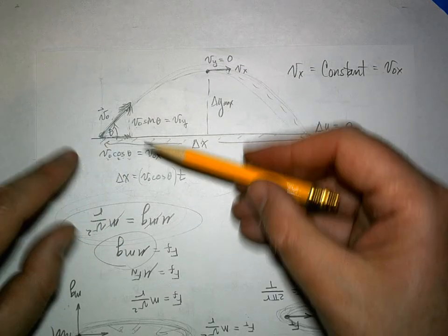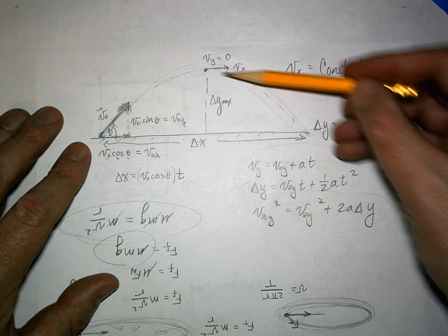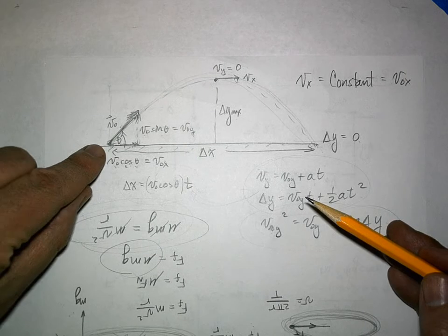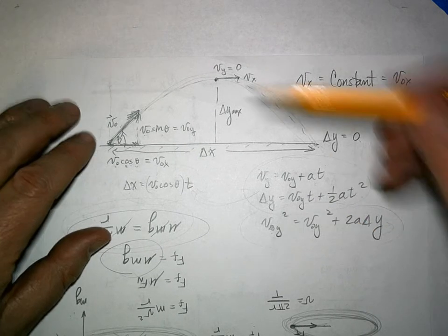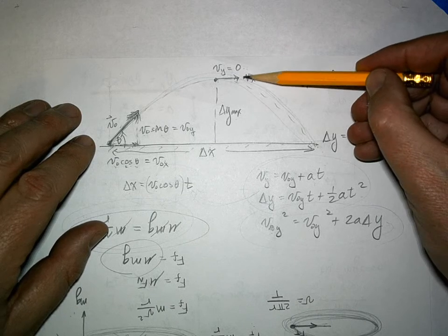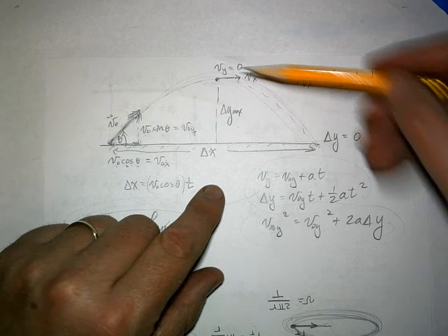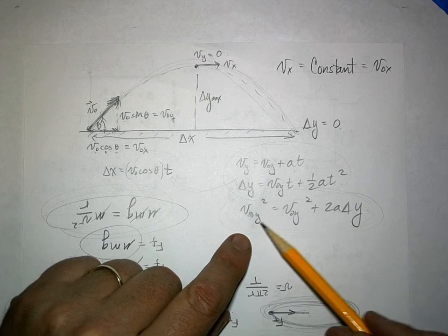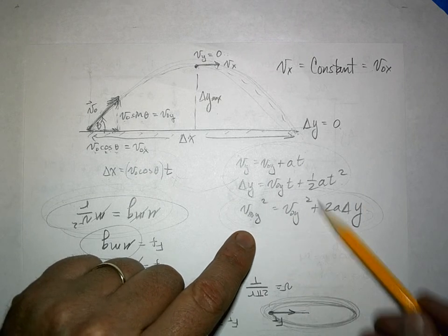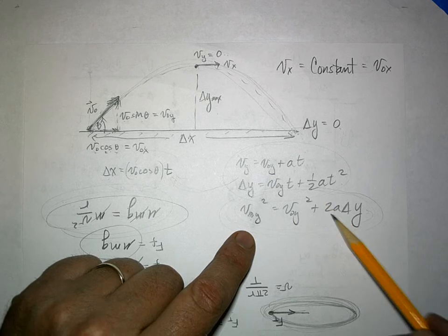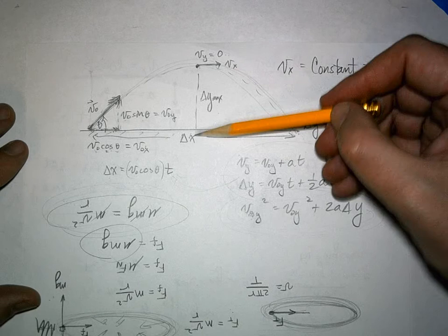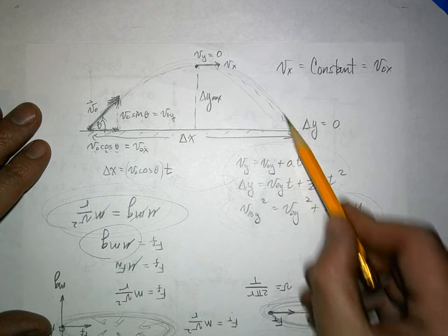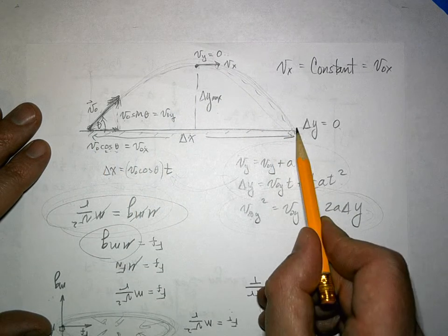At the very top of the trajectory, the y-component of velocity is zero — the ball momentarily stops moving vertically before coming back down. You can use this: set vy equals zero in the kinematic equation to get v-naught sine theta quantity squared plus 2a delta y, then solve for delta y — that's the maximum height. If you want horizontal range, when the ball lands delta y equals zero, so use that condition to solve for time.